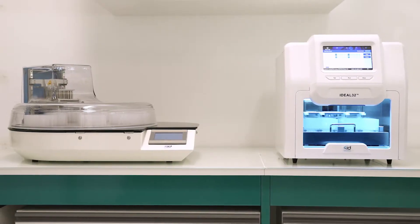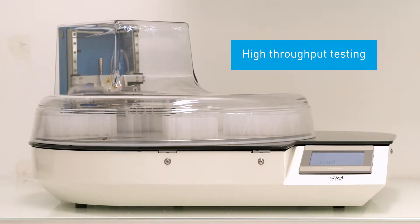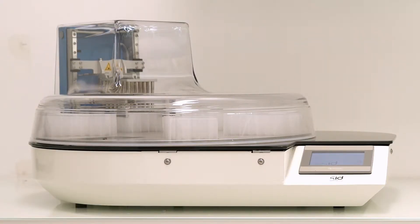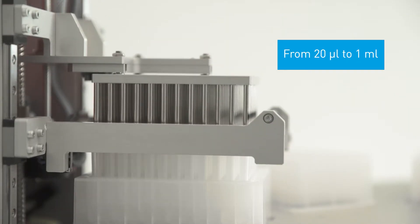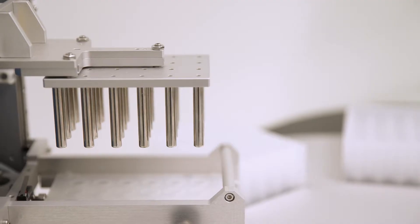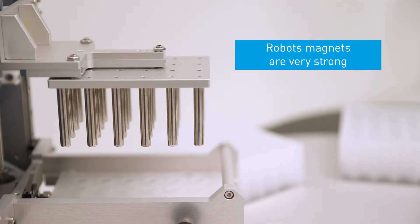More information about the robots themselves. For high throughput testing, the Ideal 96 machine extracts nucleic acids from sample volumes ranging from 20 microliters to 1 milliliter. The robot magnets are very strong to increase extraction capacity.